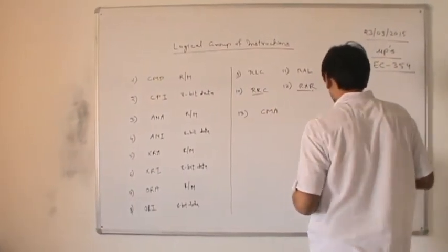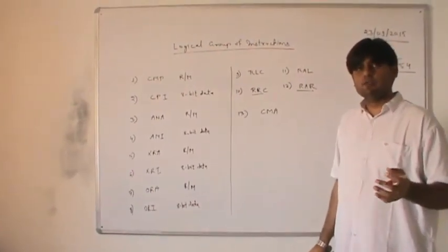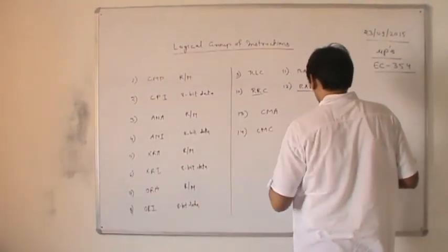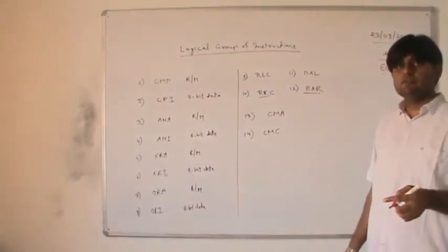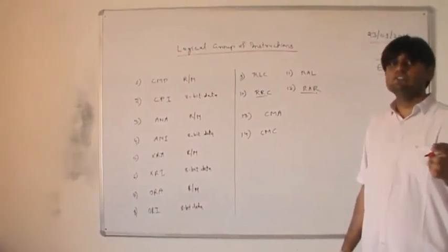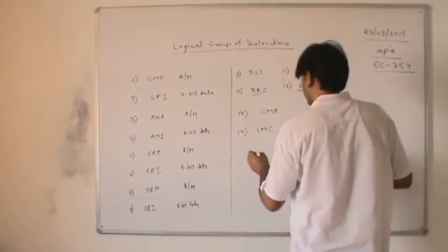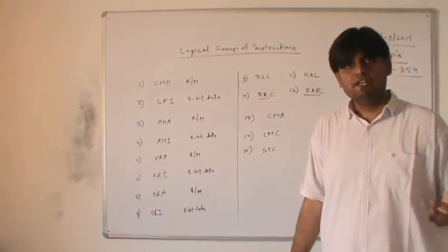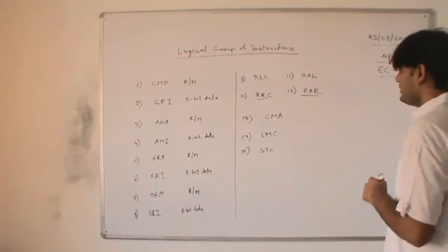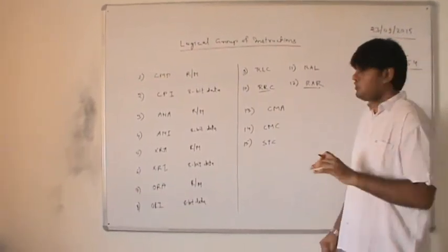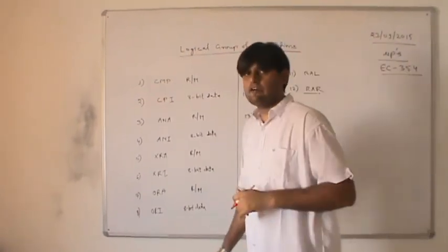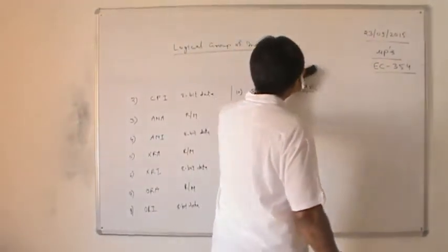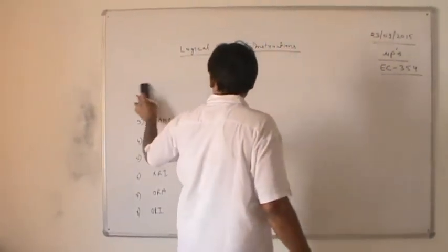The remaining logical group instructions are: CMA (complement accumulator) — directly complements the contents of the accumulator. CMC (complement carry) — if carry is 1 it becomes 0, if 0 it becomes 1. STC (set carry) — if carry is 0 it becomes 1; if already 1 it remains 1. CMA, CMC, and STC are all one-byte instructions with no operand field — implicit addressing. That is all about the logical group of instructions.